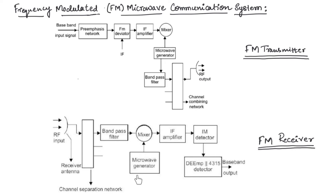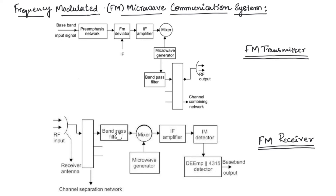This figure shows the block diagram of the FM receiver. In the FM receiver, the RF signal is received by the antenna and passed through the channel separation network, which provides separation of individual microwave channels and directs them to the respective receivers. The band pass filter filters any signal falling outside the bandwidth of the required signal, and then it is passed to the mixer circuit.